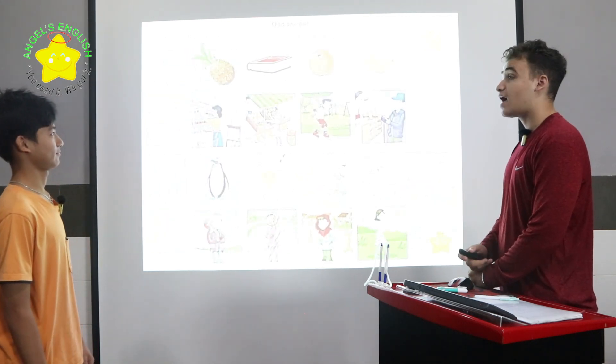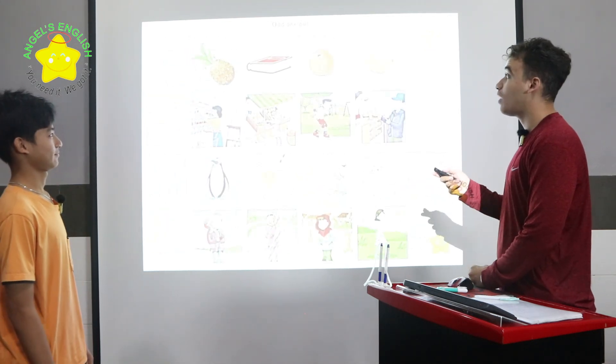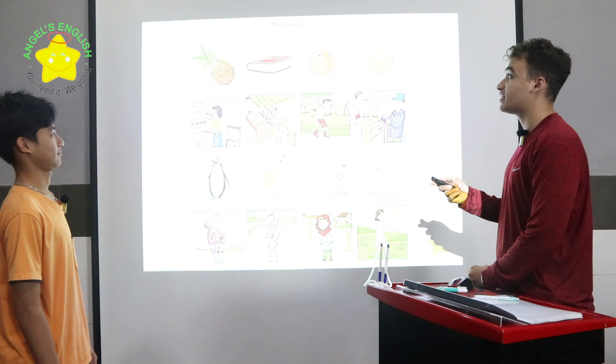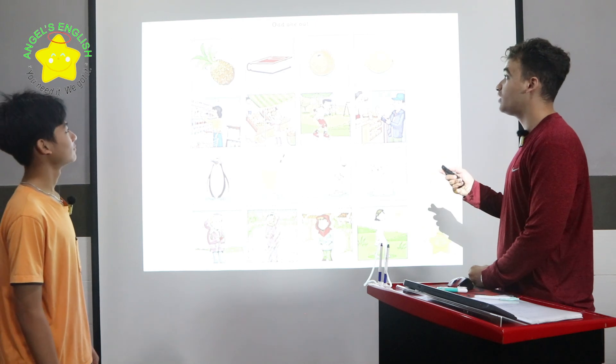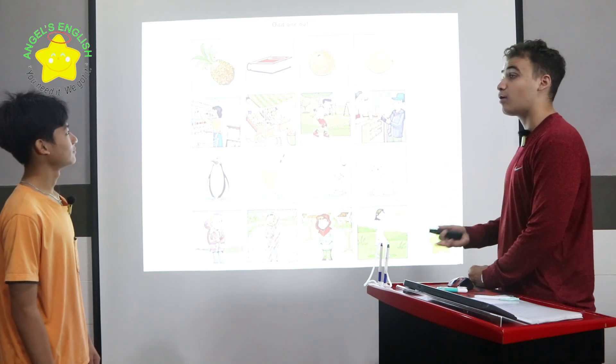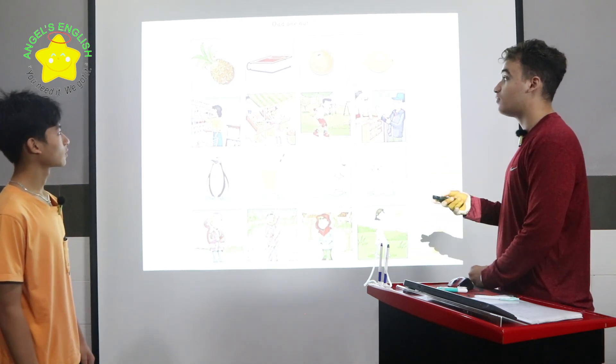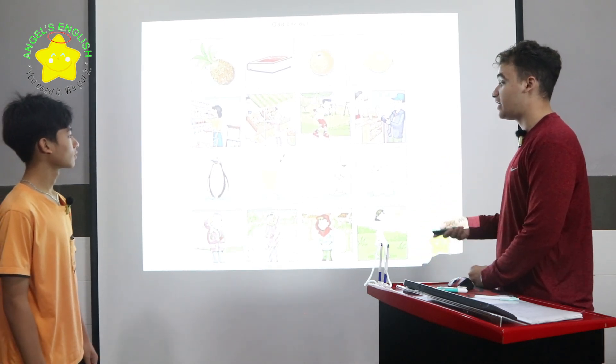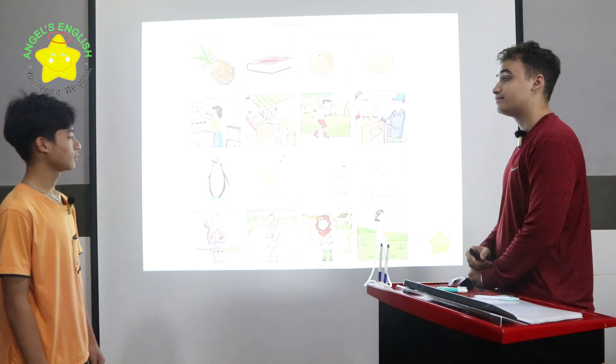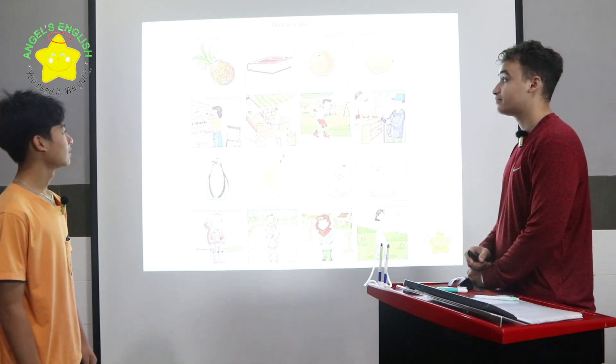This is called odd one out. In row one, the book is different because the pineapple, the orange, and the lemon are all fruits. Can you please tell me the odd ones out in rows two, three, and four? Okay.